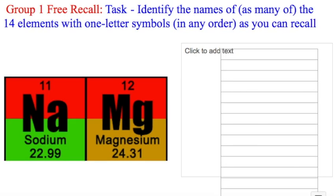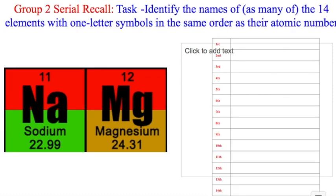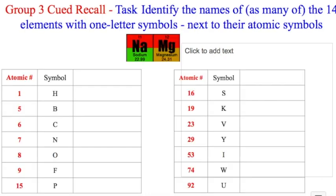At this point I'd encourage teachers to give each participant a recording sheet, then instruct each group as follows. Group one: identify as many of the 14 elements on the periodic table represented by one-letter symbols, in any order they wish. Group two: record the same elements but ordered by atomic number. Group three: given cues such as the atomic number and symbol, record those elements next to the appropriate atomic number and symbol.